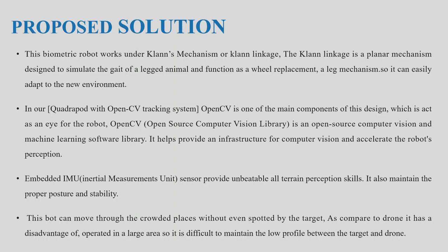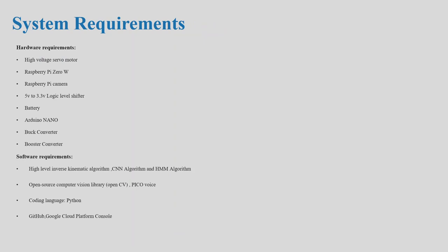This robot can move through crowded places without even being spotted by the target. As compared to the drone, the drone has disadvantages of operating in a large area, so it is difficult to maintain a low profile between the target and the drone.